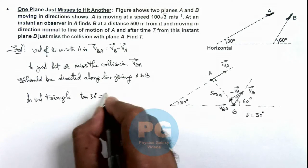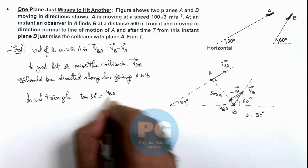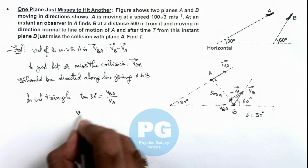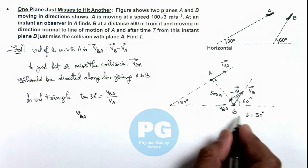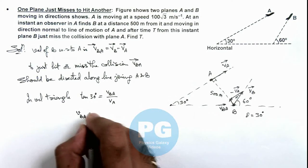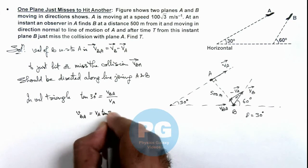This is the ratio of magnitude of vBA upon vA. So here, velocity of B with respect to A with which it is moving toward A can be written as vA tan 30 degrees.